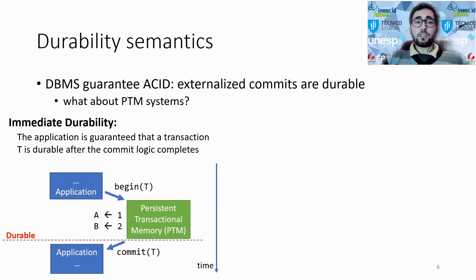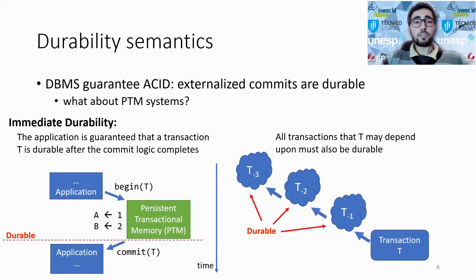SPHT adheres to the immediate durability criteria, which enforces that any transaction that returns to the application is guaranteed to be durable. In this example, I show a transaction T that becomes durable just before returning to the application. This durability model also enforces that all preceding transactions that T may depend upon must be durable at the moment of returning to the application, avoiding inconsistency issues that arise from inter-transaction dependencies.